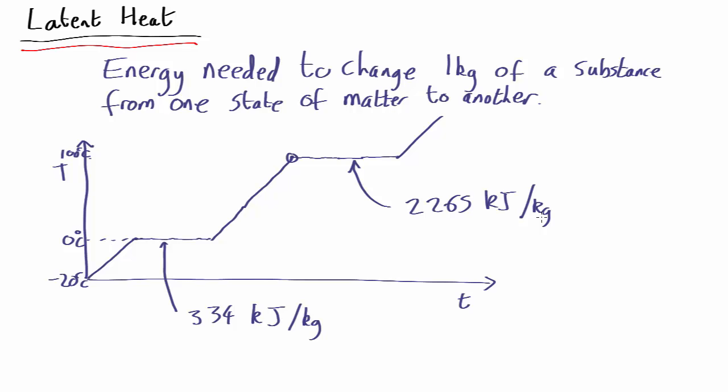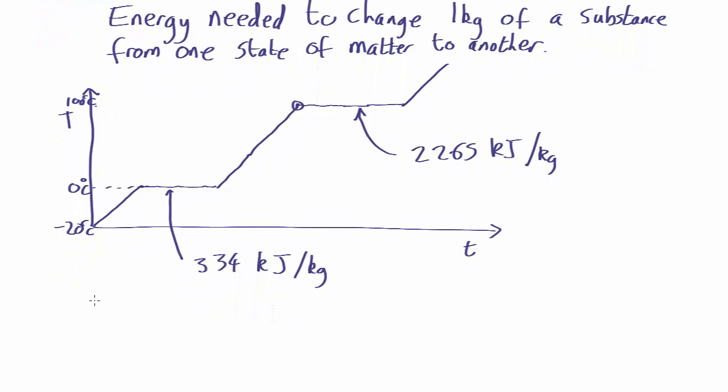So let's do a specific worked example. Let's say we had water at room temperature, say 20 degrees centigrade, and we want to put it in a frying pan and we want to boil it dry so it's all turned into steam. How much energy will we require? Well first of all, you've got water at 20 degrees C and you're going to need to increase it to 100 degrees C.